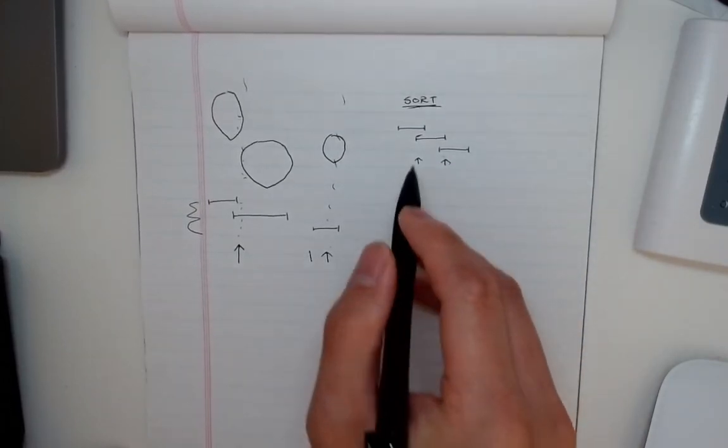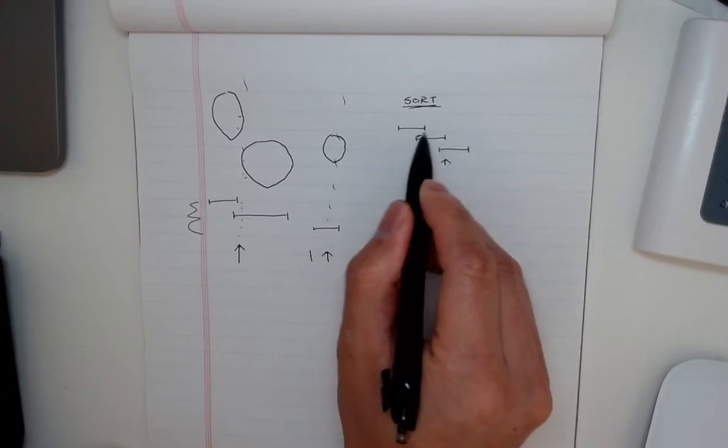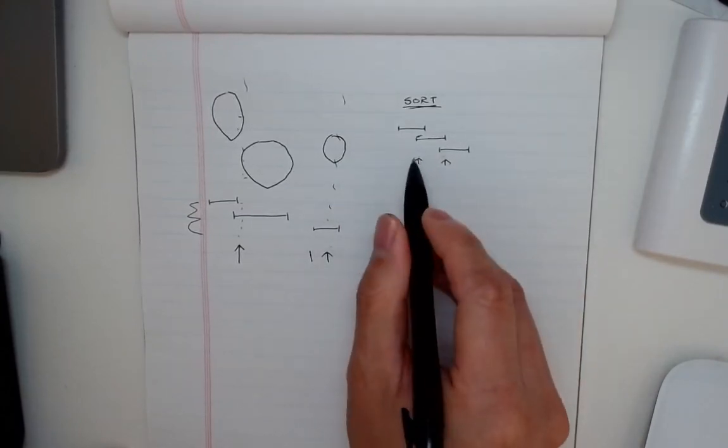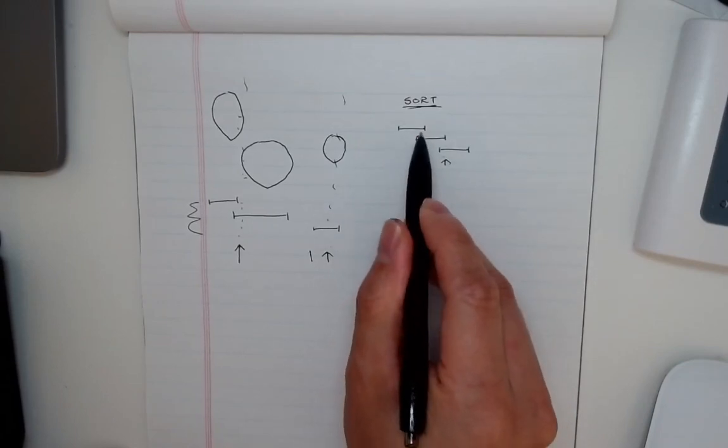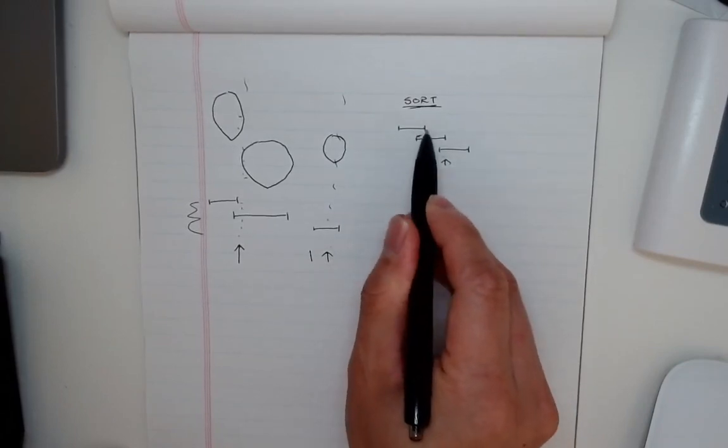So what we'll do is start with the first balloon and we're going to check to see if the start axis of the next balloon is less than the end of this balloon here. And if that's the case,